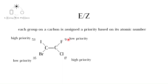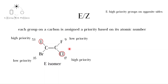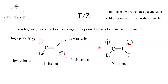If the atoms of high priority are on opposite sides of the double bond, we use the prefix E, from the German word Entgegen, meaning 'opposite'. This is the E isomer. If the atoms of higher priority are on the same side of the double bond, we use the prefix Z, from the German word zusammen, meaning 'together'. This is the Z isomer.